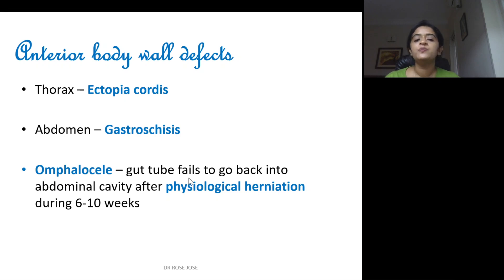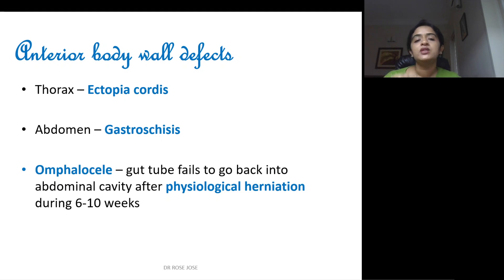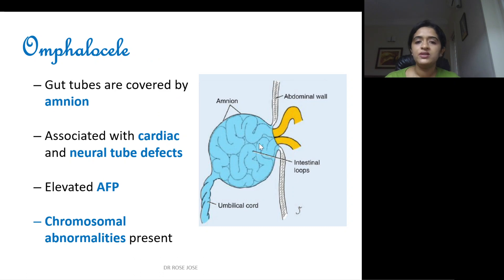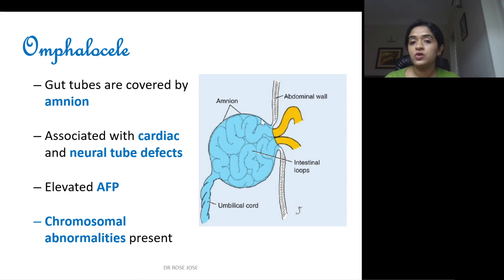Omphalocele is a condition where the gut tube, which came out of the abdominal cavity during physiological hernia, fails to go back to its original position. The features of omphalocele: the gut tubes lie outside but are covered by the amnion; it is associated with cardiac and neural tube defects; you will get elevated alpha-fetoprotein; and chromosomal abnormalities will be present. In gastroschisis, the tubes lie outside but there is no amnion covering, and there are no chromosomal abnormalities.